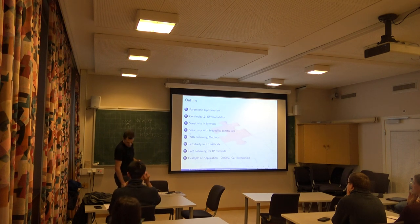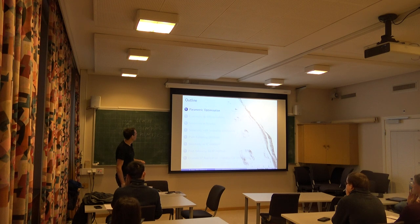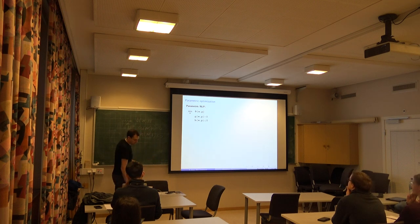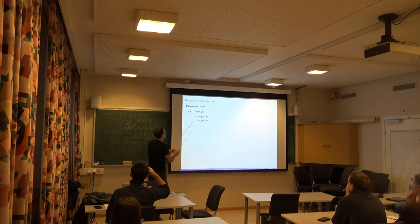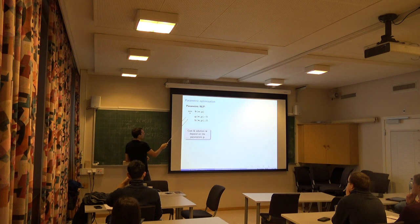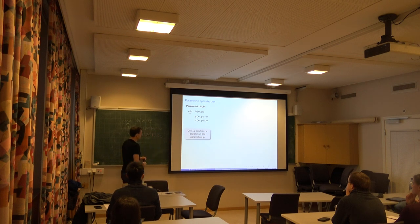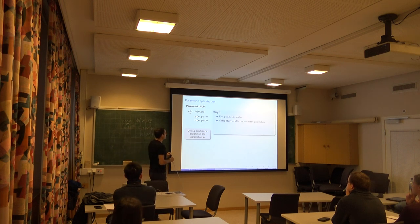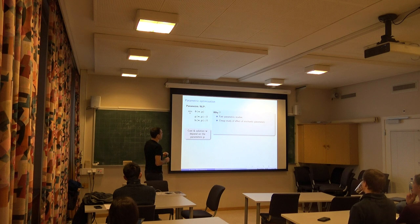Pretty big menu. We'll probably finish in the afternoon. So you have this bunch of parameters P entering the problem — it can be a vector, it can be anything. When you solve this problem for a given P, you get the solution W, the dual solution — the lambdas and the mus — and you will have a cost that corresponds to this P. If you change P, all these things are likely to change. What we will do in parametric optimization is try to understand how changing P affects the cost and solution.